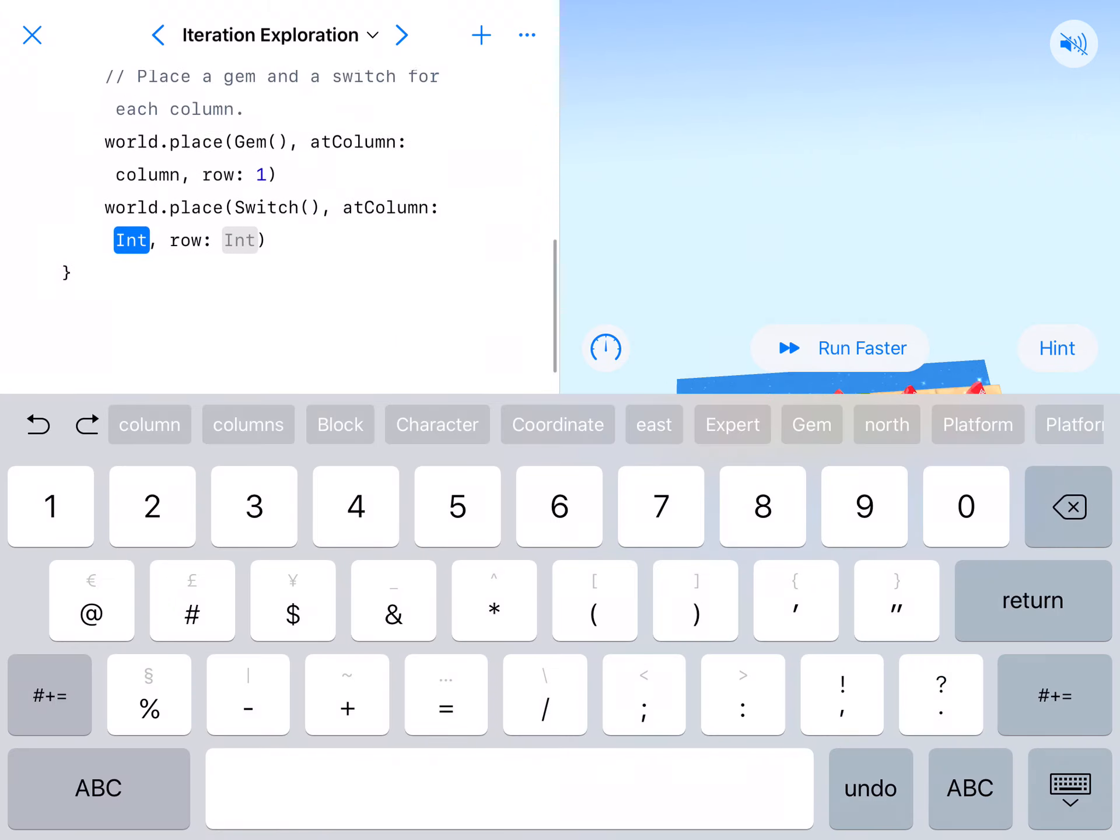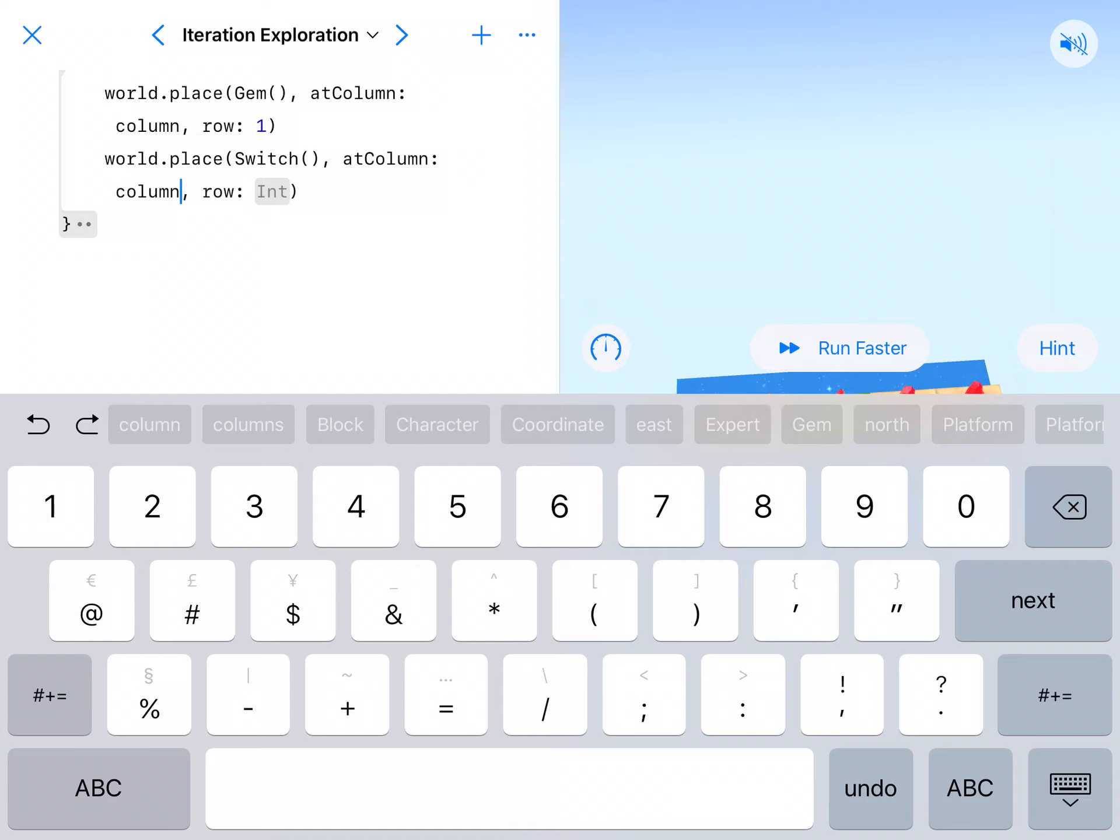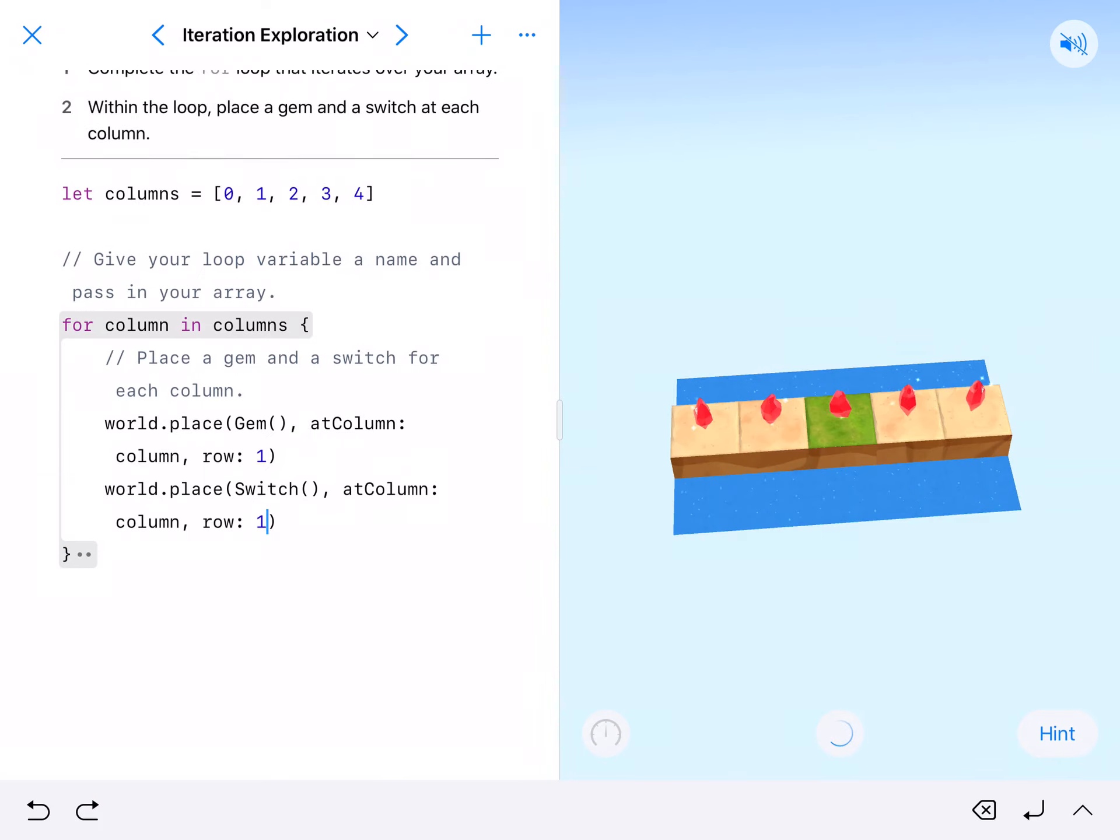At column - now remember, we want it at all of the columns that we have stated in our array. So at column, all the ones in the array columns, and we want it at row one. We'll go ahead and run this, and this will put them all at row one.